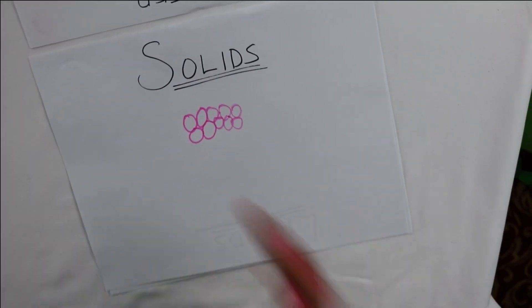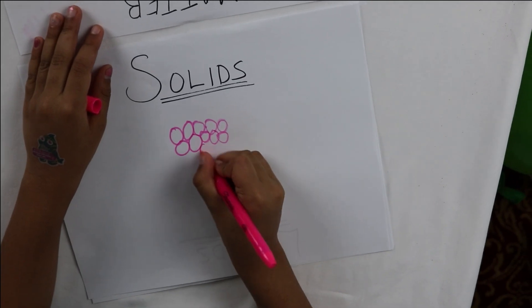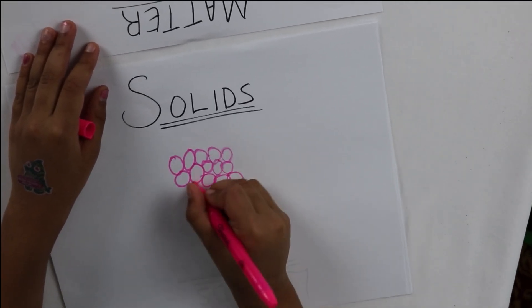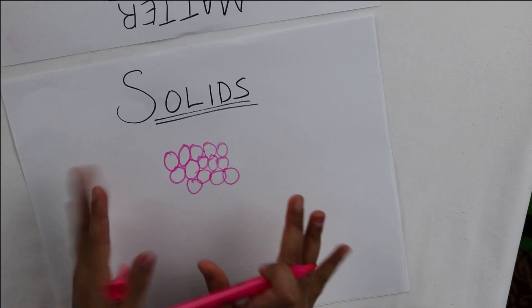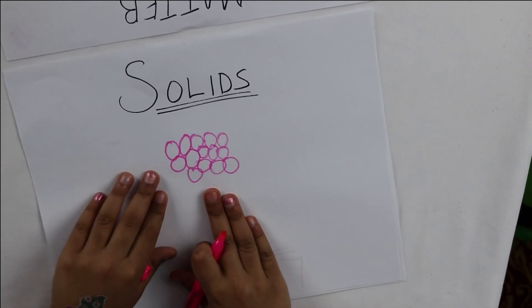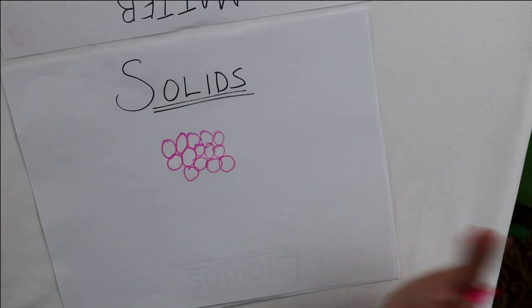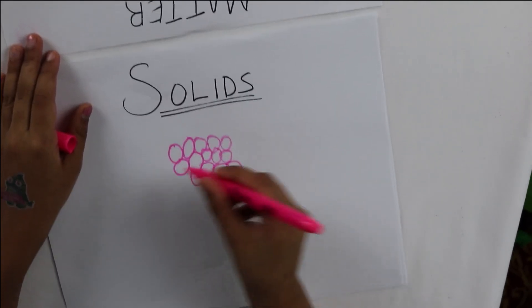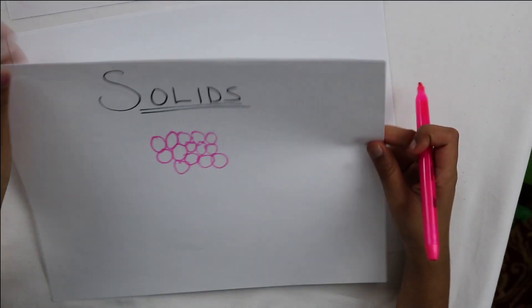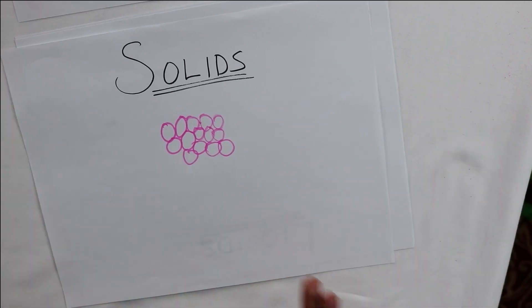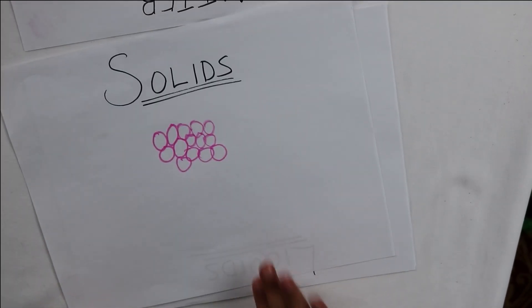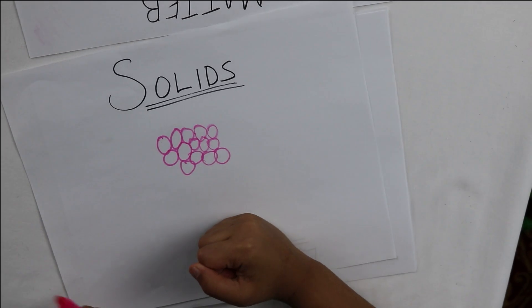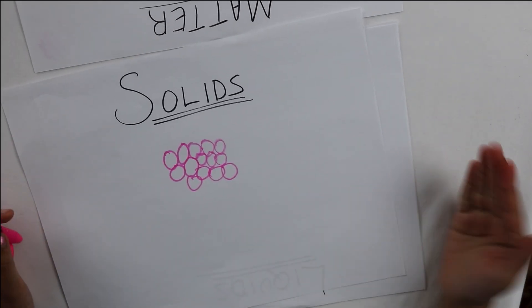They're all connected in one place — that's why a solid is never moving around. You can put it with other solids. This is how the molecules look in solids. They're all connected like that, which is why you cannot pass through a solid. You can see them though.